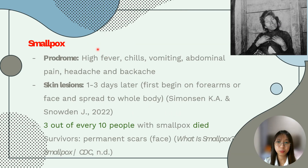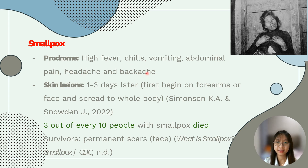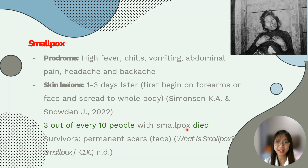This disease presents with a non-specific febrile prodrome of high fever, chills, vomiting, abdominal pain, headache, and backache. The skin lesions occur 1 to 3 days later and first begin on the forearms or face and spread to the rest of the body. Most people with smallpox recover, but about 3 out of every 10 people with smallpox died. Many smallpox survivors have permanent scars over large areas of their body, especially their face.